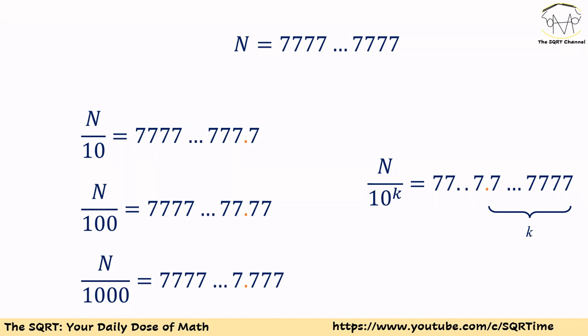In general, if we divide N by 10 to the power of k, and when we are careful about the value we pick for k, then the leading digit of N over 10^k is going to be the same leading digit that we have in N.